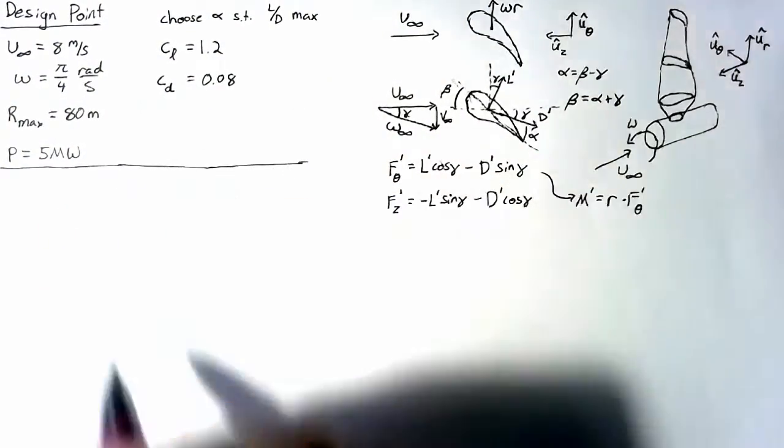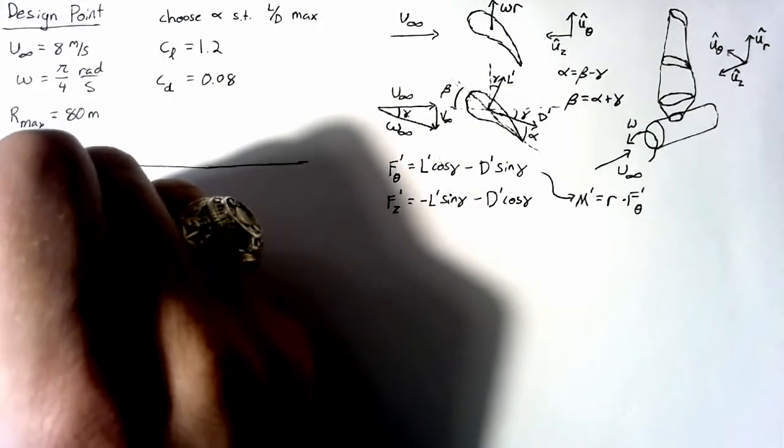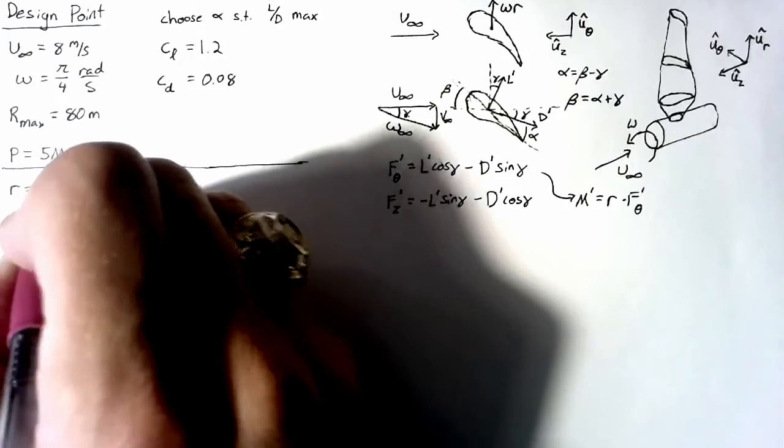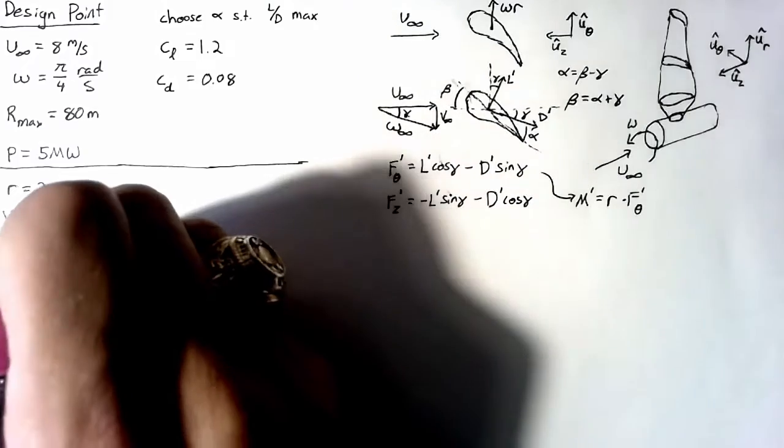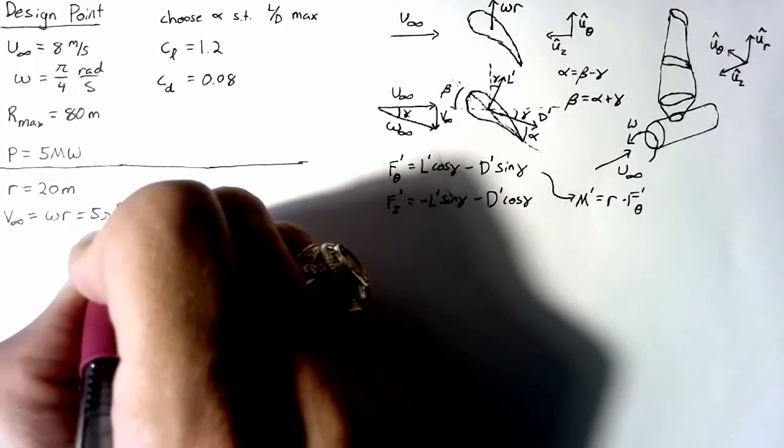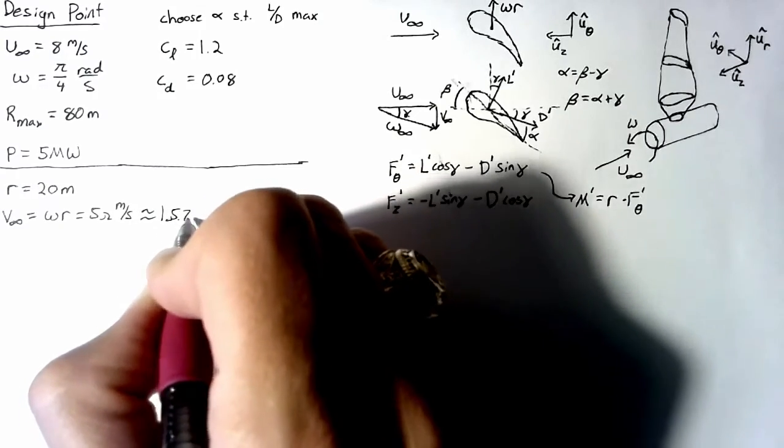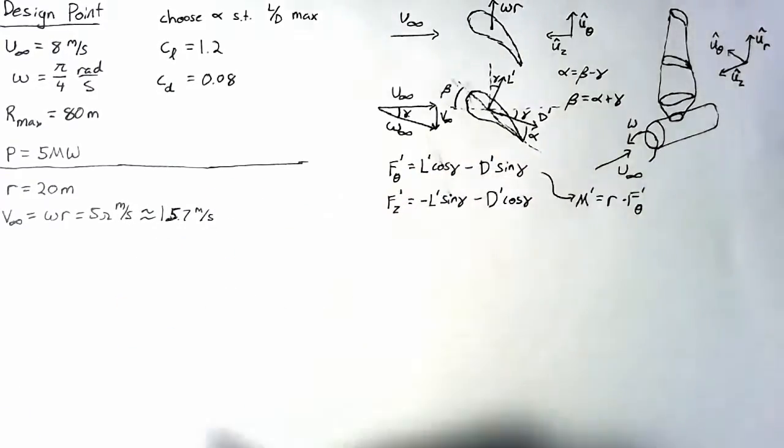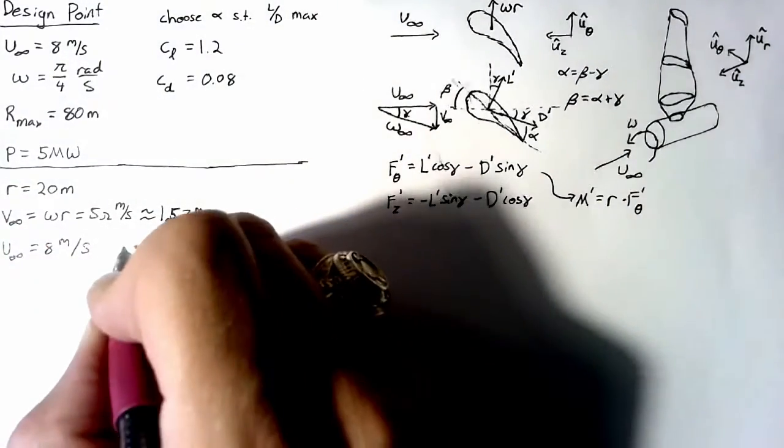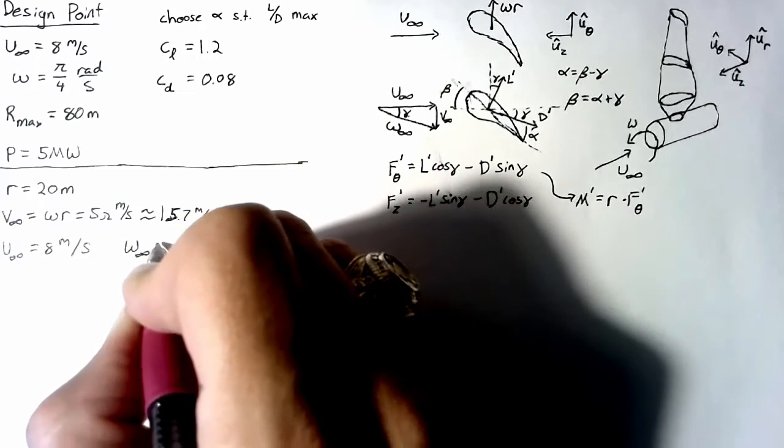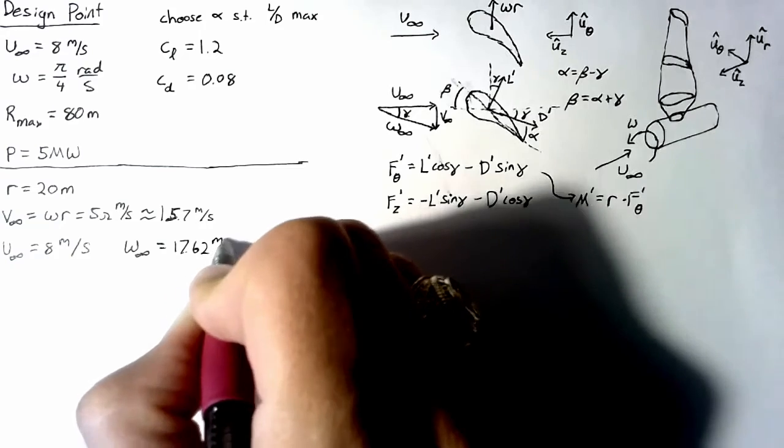So let's choose a specific section, which means a specific radius, and analyze that. So our radius that we choose is going to be 20 meters out from the hub. Our V infinity is going to be omega times R, and that's going to end up being 5 pi meters per second, which is right around 15.7 meters per second. Our U doesn't change, that's just going to be 8 meters per second. But then we can calculate our W infinity using Pythagoras, and we end up with 17.62 meters per second.